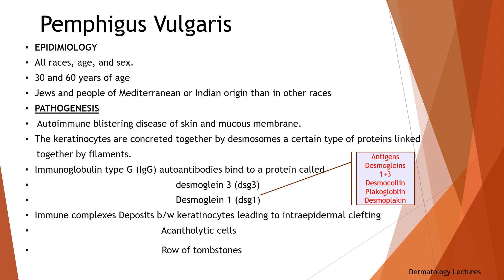First of all, we will discuss pemphigus vulgaris. Pemphigus vulgaris affects people of all races, age, and sex. Most commonly it appears between the ages of 30 and 60 years, and is particularly common in Jews and people of Mediterranean or Indian origin than in other races, most likely because of genetic reasons.